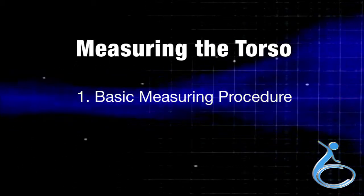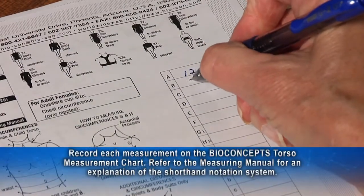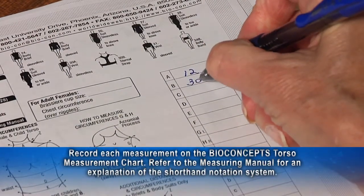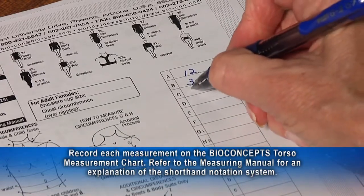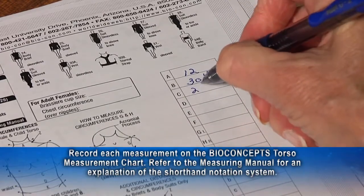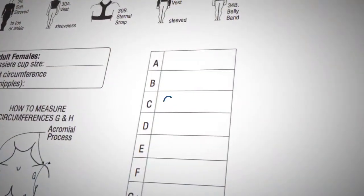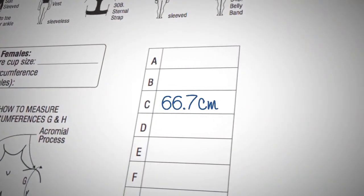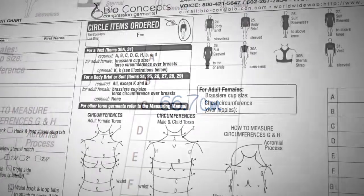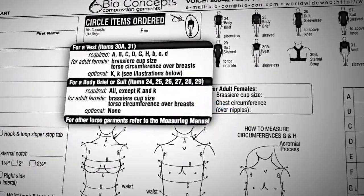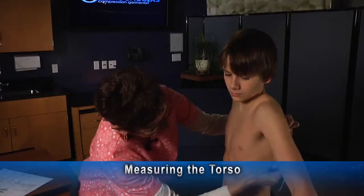Section 1 is basic measuring procedure. Record each measurement on the Bio Concepts torso measurement chart. Refer to the measuring manual for an explanation of the shorthand notation system. Measurements recorded in inches — measurements in centimeters are welcome, simply record in decimal notation. It is critical to look up the required measurements before you start measuring.